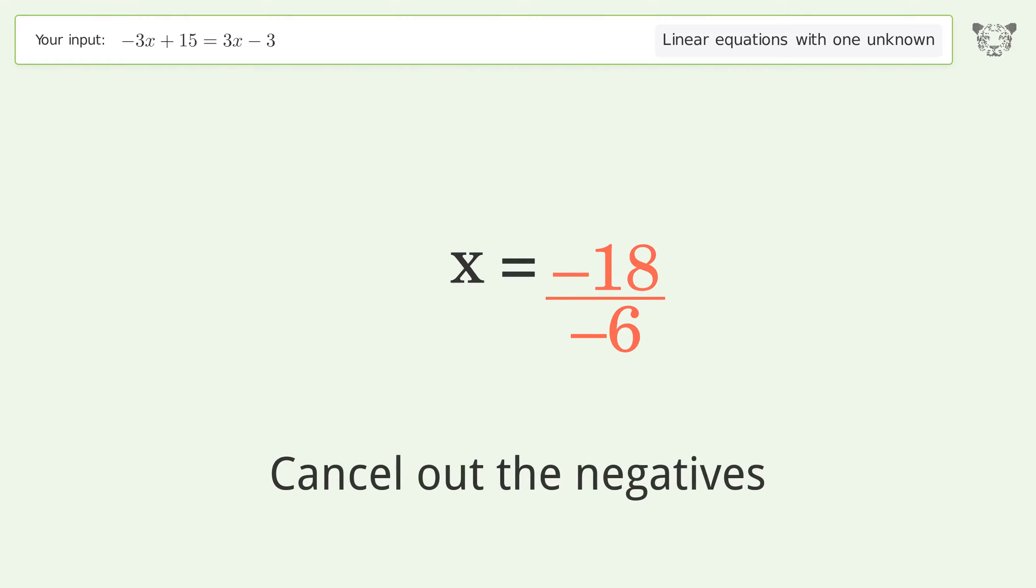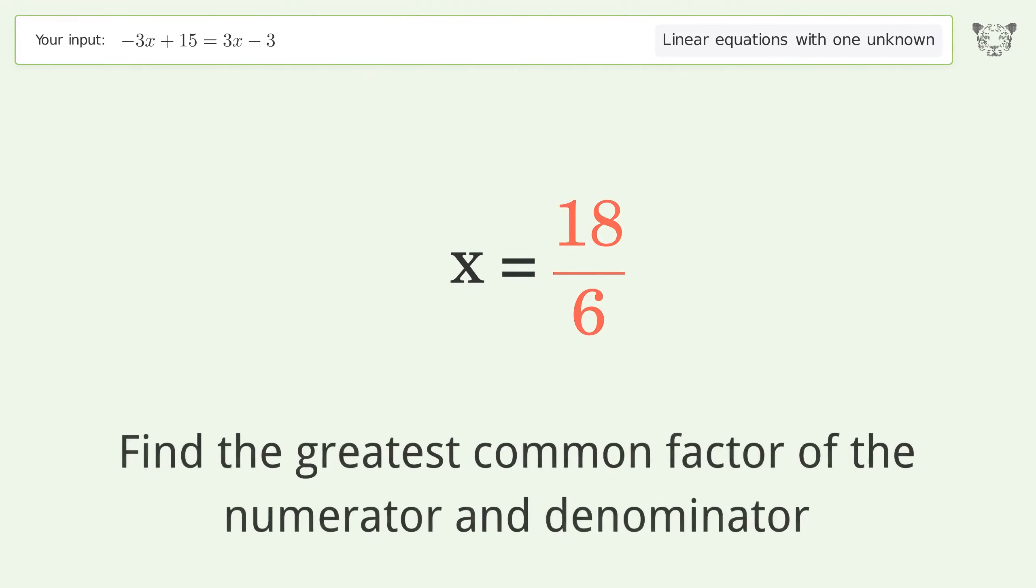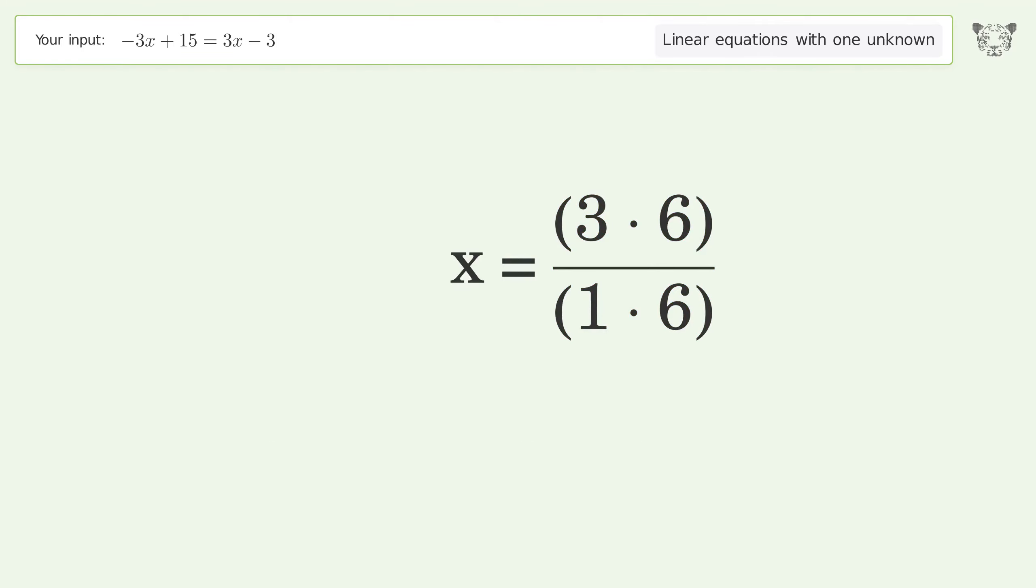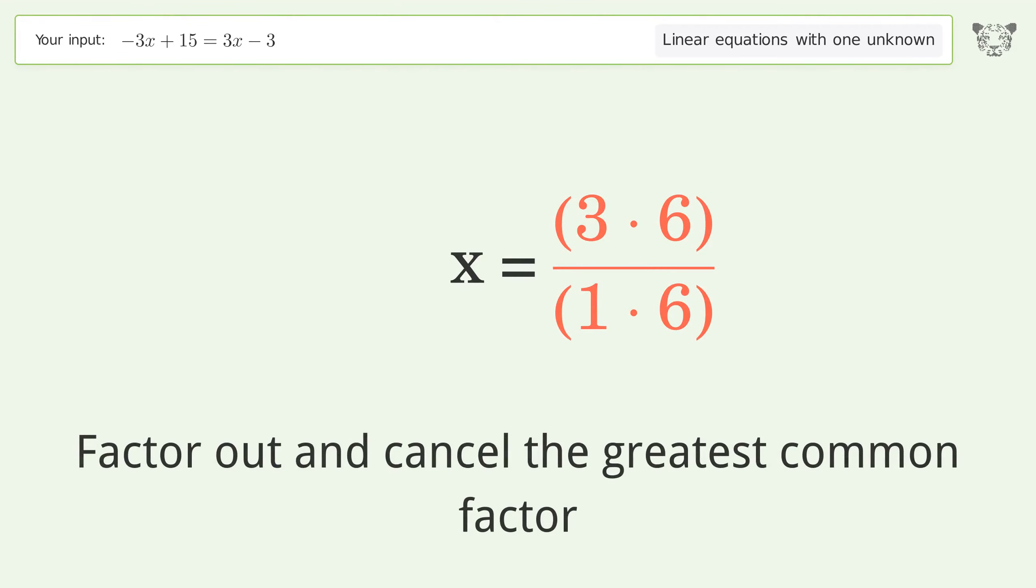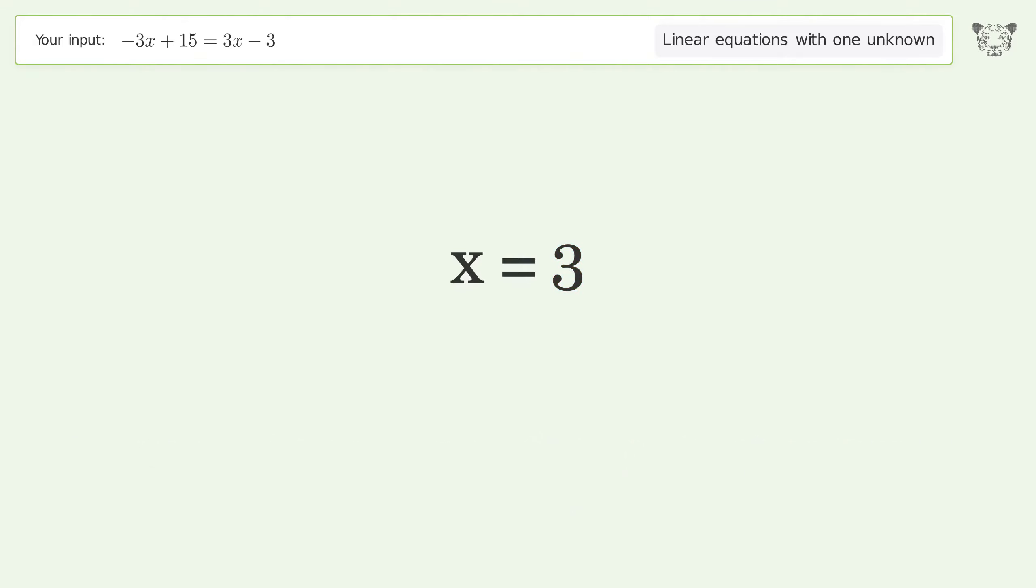Cancel out the negatives. Find the greatest common factor of the numerator and denominator. Factor out and cancel the greatest common factor. And so the final result is x equals 3.